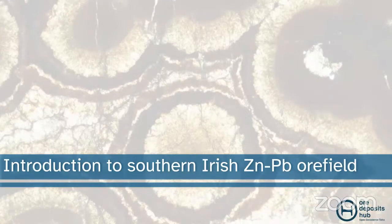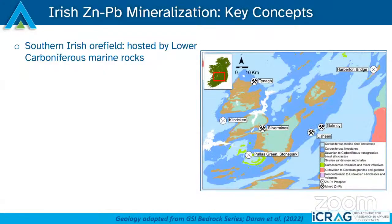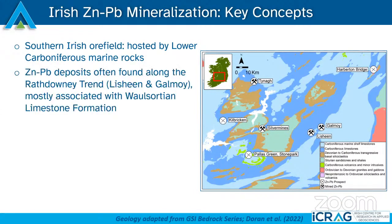Moving to the study area: the southern Irish zinc-lead ore field. In Ireland, much of the mineralization is hosted by Lower Carboniferous marine rocks. In the southern Irish ore field in particular, zinc-lead deposits are generally found along an area locally referred to as the Rathdowney Trend, a roughly 40-kilometer northeast-trending zone composed mostly of dolomitized limestone formation. This includes the Lachine and Galmoy deposits — Lachine being the deposit we're talking about today.